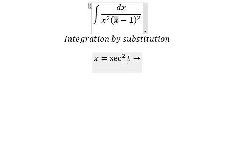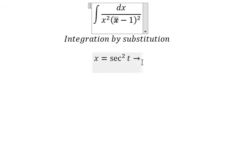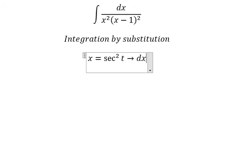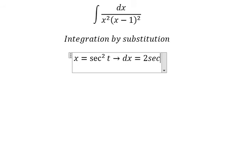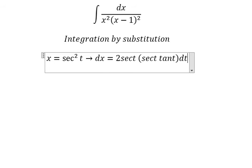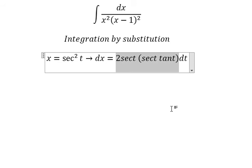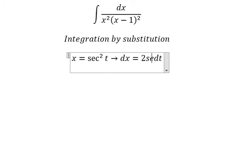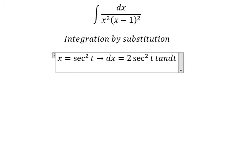Next we differentiate both sides. We get ds equal to two secant of t, and we have another secant of t times tan t, dt. So this gives us two secant t squared times tan t.